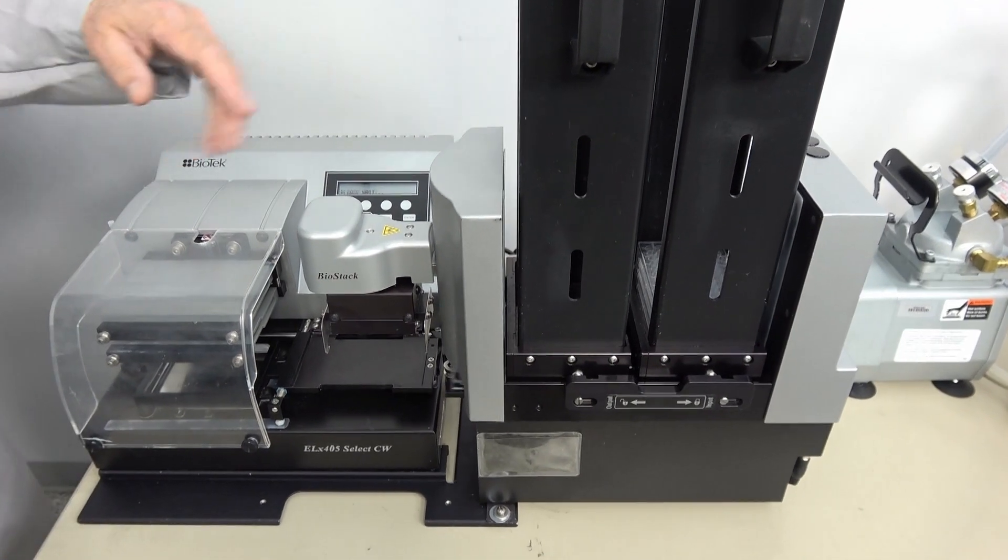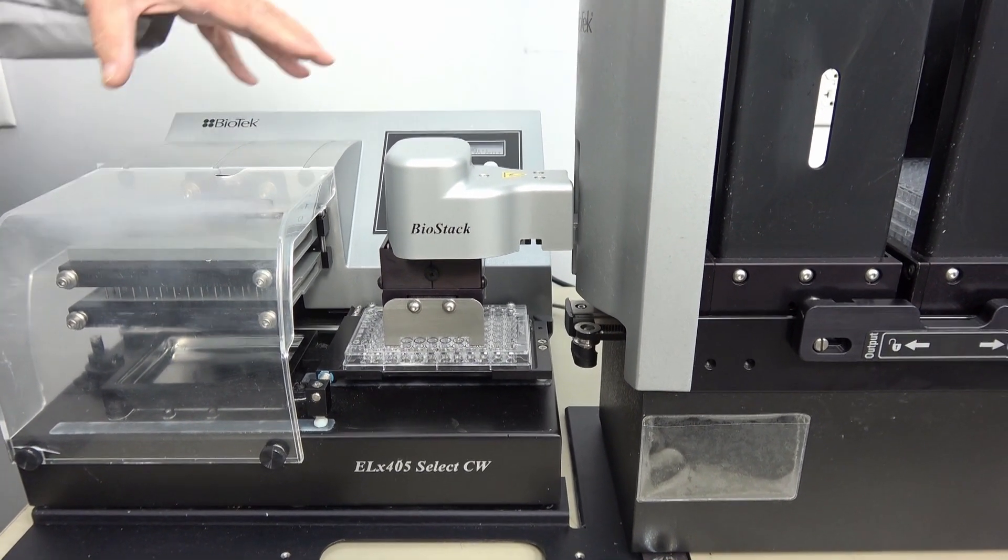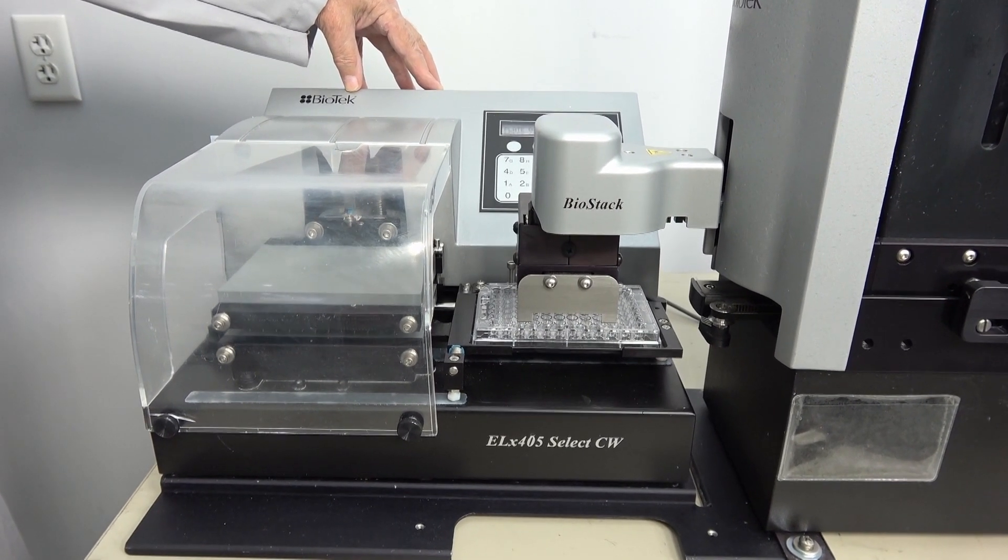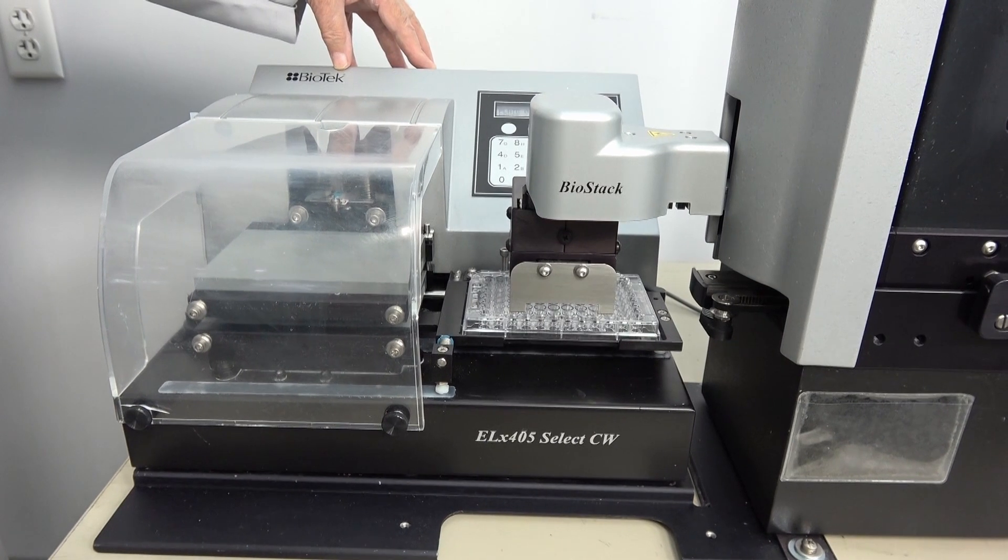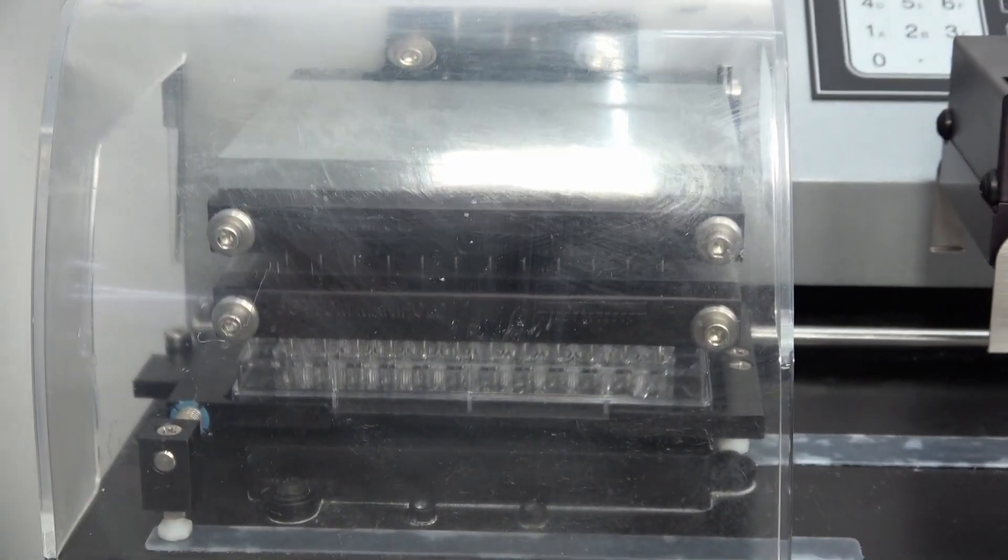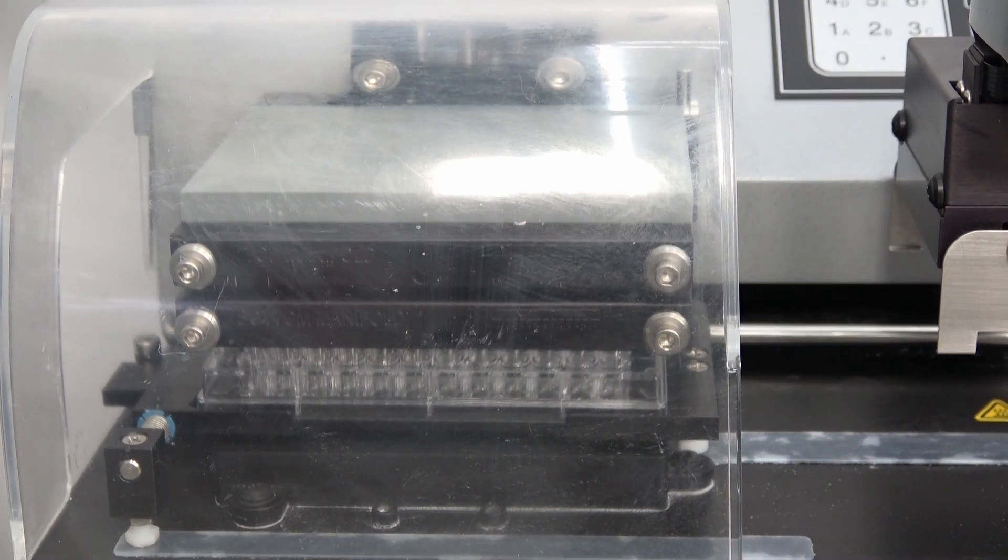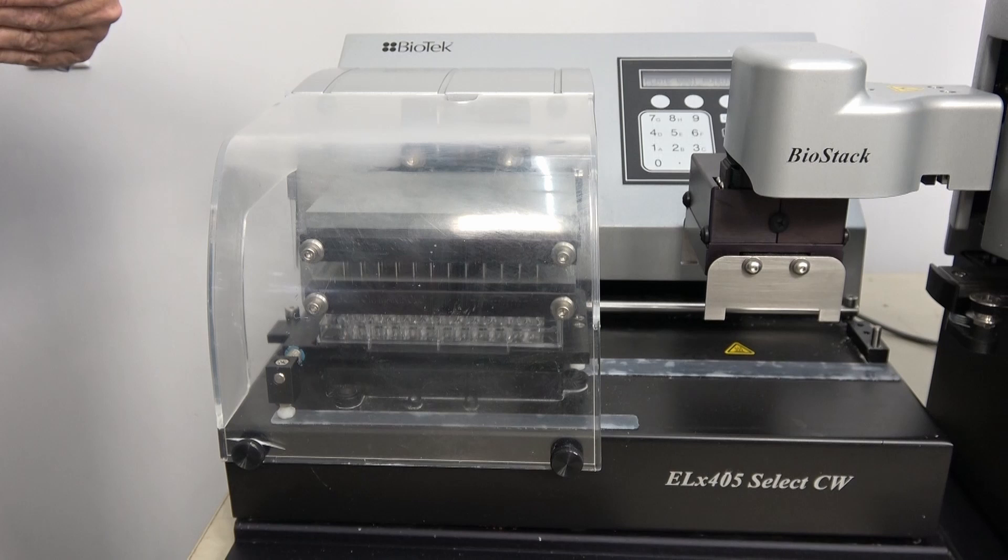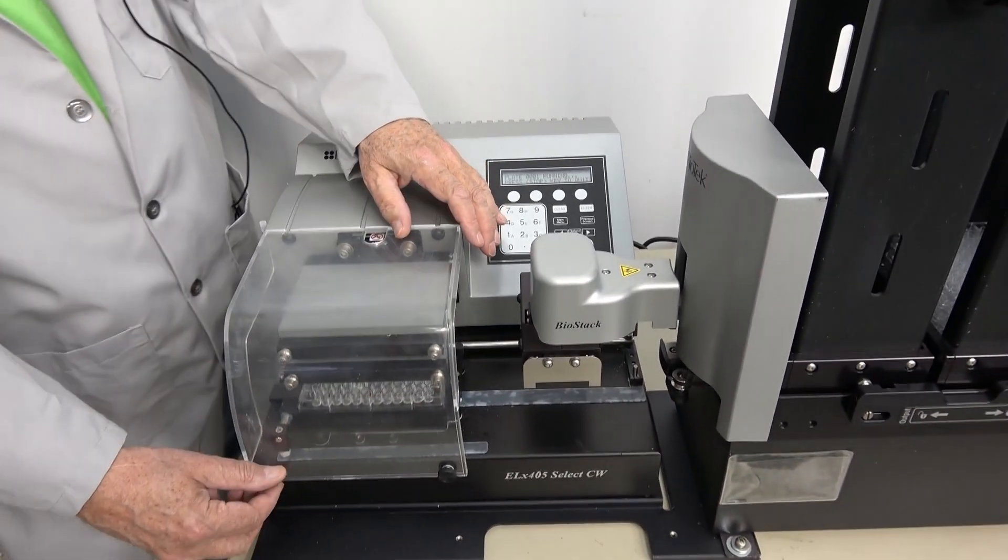It lowers the plate out, brings it out. Drops into place. As you hear there, the vacuum pump clicks on. It goes ahead and starts priming. Gets ready for the wash. You can hear it doing the aspiration. You can set this up to do several cycles on the wash. One, two, three. I think you can do up to seven cycles. How much liquid you want to use in the wash. In addition to doing washing, it also dispenses. So again, you have similar options on that as well.